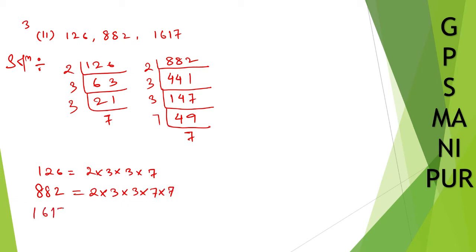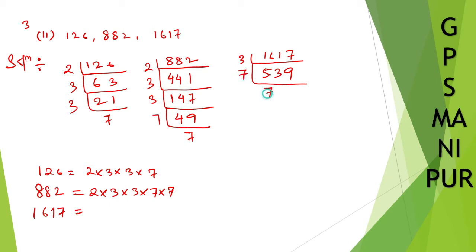Now for 1617. We can divide by 3: 3 into 539. Checking further, we divide by 7: 7 into 77, then 7 into 11. So 1617 = 3 × 7 × 7 × 11.